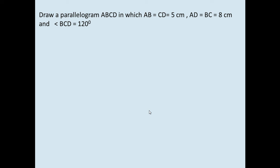The first thing we need to draw is angle BCD at 120 degrees. When we want to draw the angles, we need a line as the base. We use line BC as the base — the length of BC is 8 centimeters. Then, with C as the point, take your protractor and draw 120 degrees.